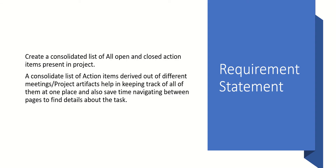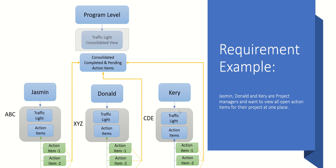In this particular case, we have three project managers: Jasmine handling project ABC, Donald handling XYZ, and Kerry handling CDE. In different meetings — where most of the time goes into communication — the outcome is a set of action items for the team. Something needs to be delivered. For a project spanning three months, you might end up doing 50 meetings, and you capture minutes of meeting each time you meet with stakeholders.